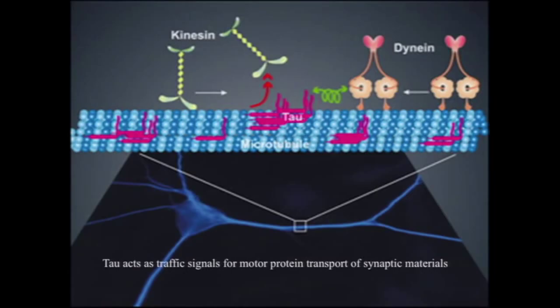Microtubules transport various materials accurately across long distances, even organelles like the energy-producing mitochondria. Packages are guided along the surface of microtubules by various motor proteins which interact with the tiny tau proteins on the microtubule surface like roadsides.